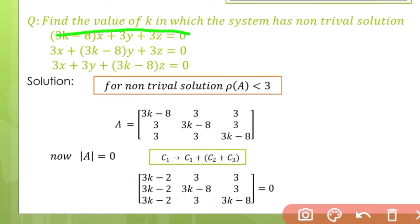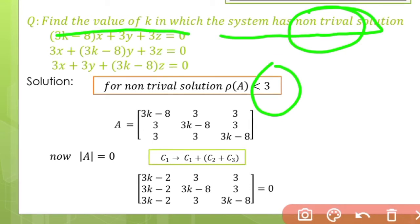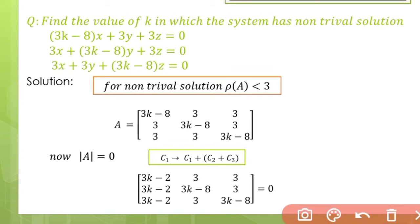Let's do the question. Find the value of k where the system has non-trivial solution. For non-trivial solution, the rank is reduced by number of variables. Number of variables is 3, so the rank could be 2 or 1.